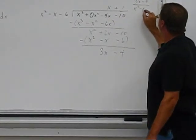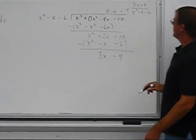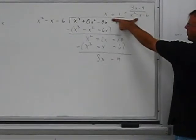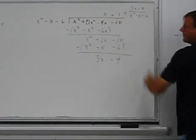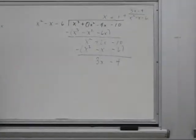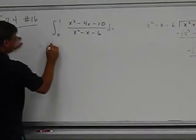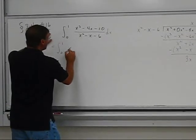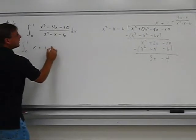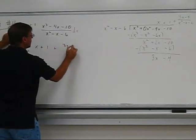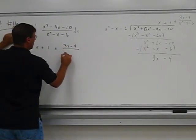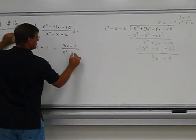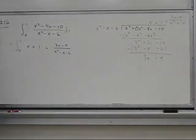And that's the quantity that you get through the long division. So I can rewrite this integral here, as the integral from 0 to 1 of x plus 1 plus 3x minus 4 over x squared minus x minus 6, and some of this we can do right away.